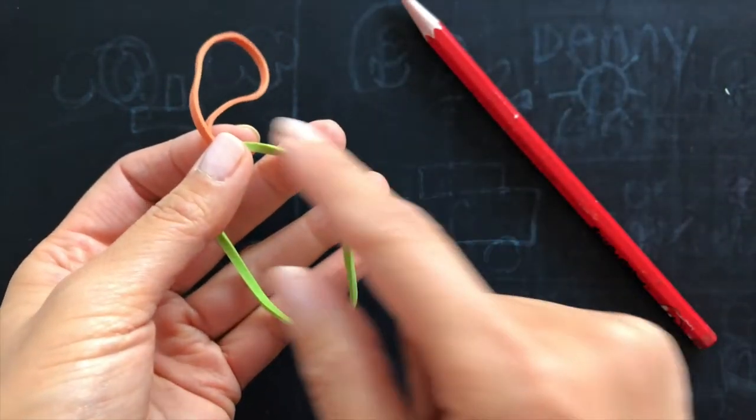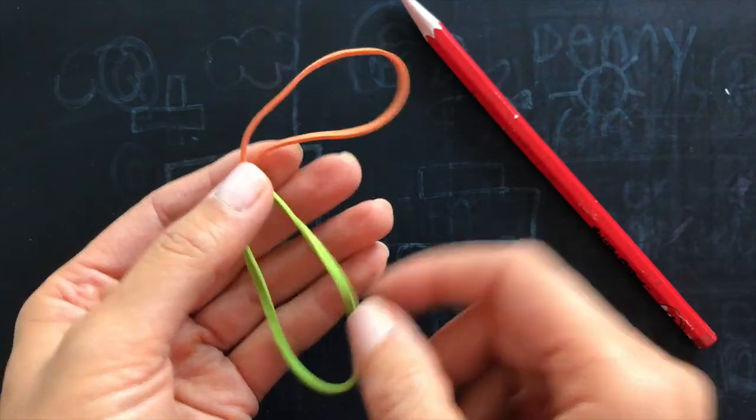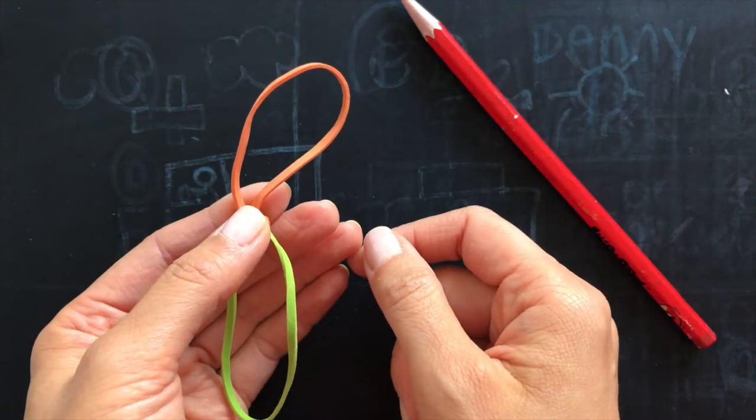One hole is for the wrist. The other hole will hold the pencil.